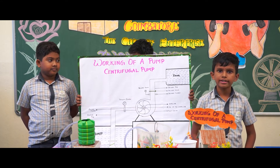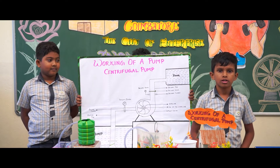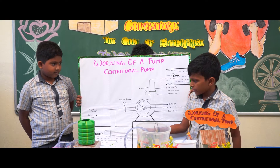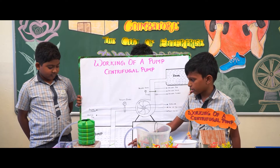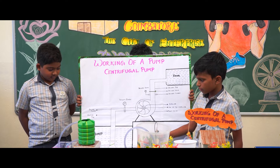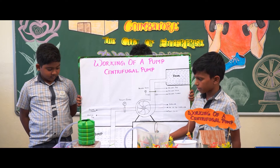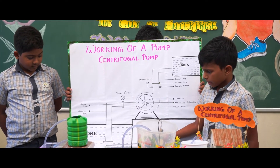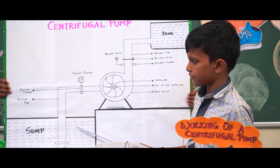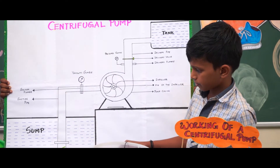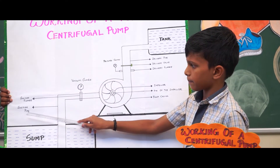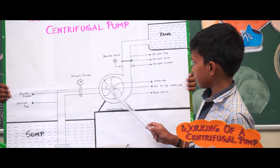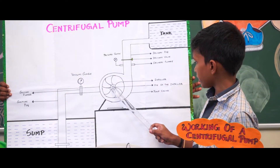Before that, we can identify the components of the centrifugal pump. At the bottom of the pump we have the suction strainer. The water will be sucked in by removing foreign materials. Above that we have the footwell, and there is a sump where the water will be stored. The water passes through the suction pipe — one end is connected to the strainer, and the other end is connected to the eye of the impeller.